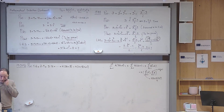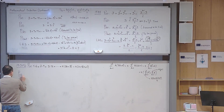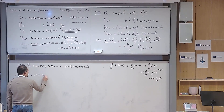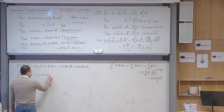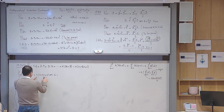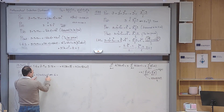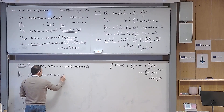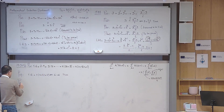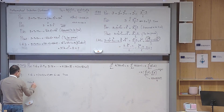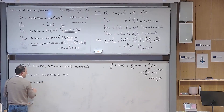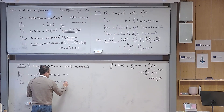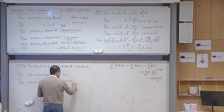Check P(1): left-hand side is 1·6 = 6; right-hand side is 1·2·3 = 6. True. Write P(k): 1·6 + 2·9 + ... + k(3k+3) = k(k+1)(k+2), assumed to be true. Write P(k+1): replace k with k+1 everywhere. The last term on the left becomes (k+1)(3k+6). The right-hand side becomes (k+1)(k+2)(k+3). Write: to be proven.